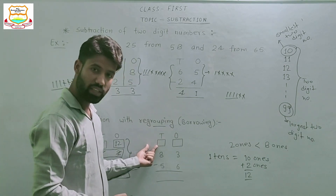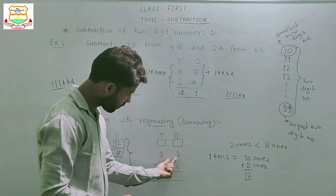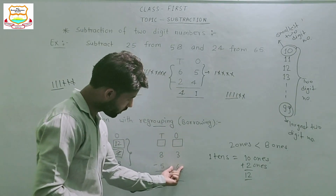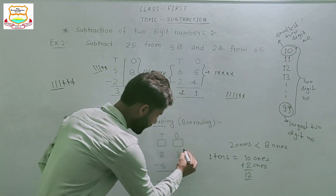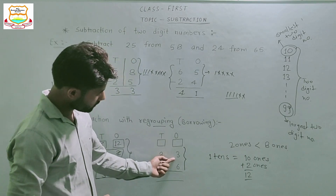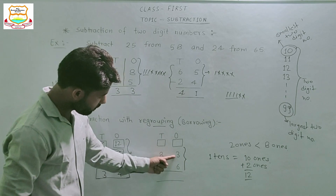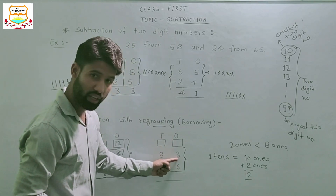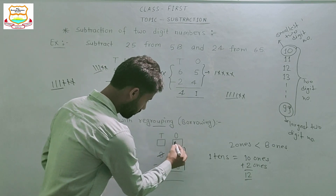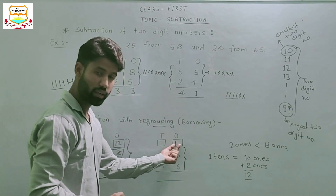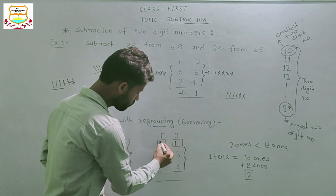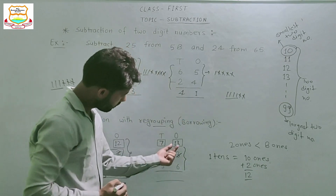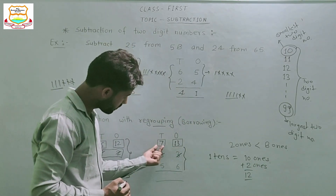The next example is: subtract 56 from 83. Same process. 3 is smaller than 6 — 3 ones is smaller than 6 ones, and it is impossible to subtract 6 from 3. So borrow 1 from the tens column. Now 8 minus 1 equals 7 — write 7 in the tens box. Now it becomes 13 in the ones column.